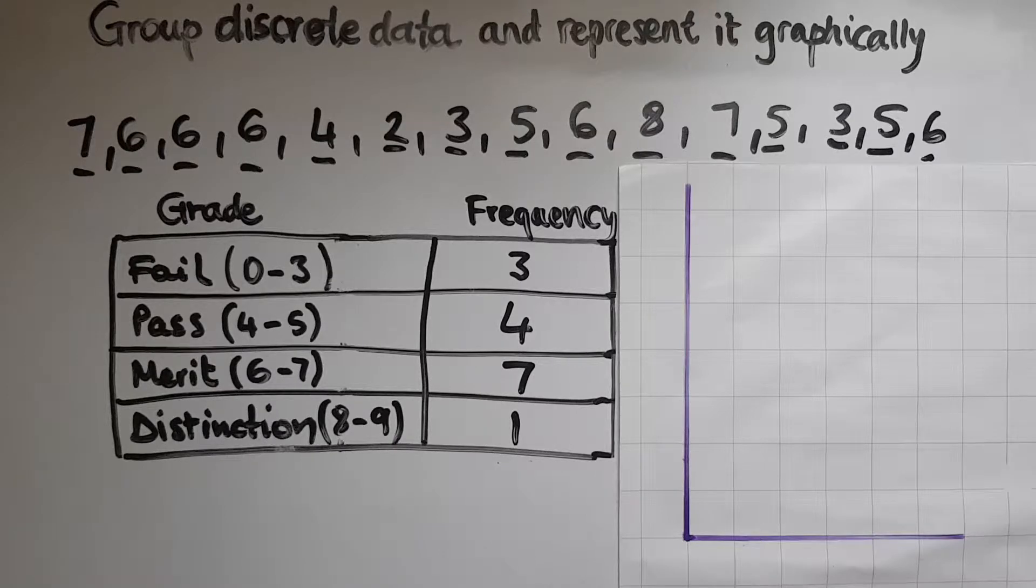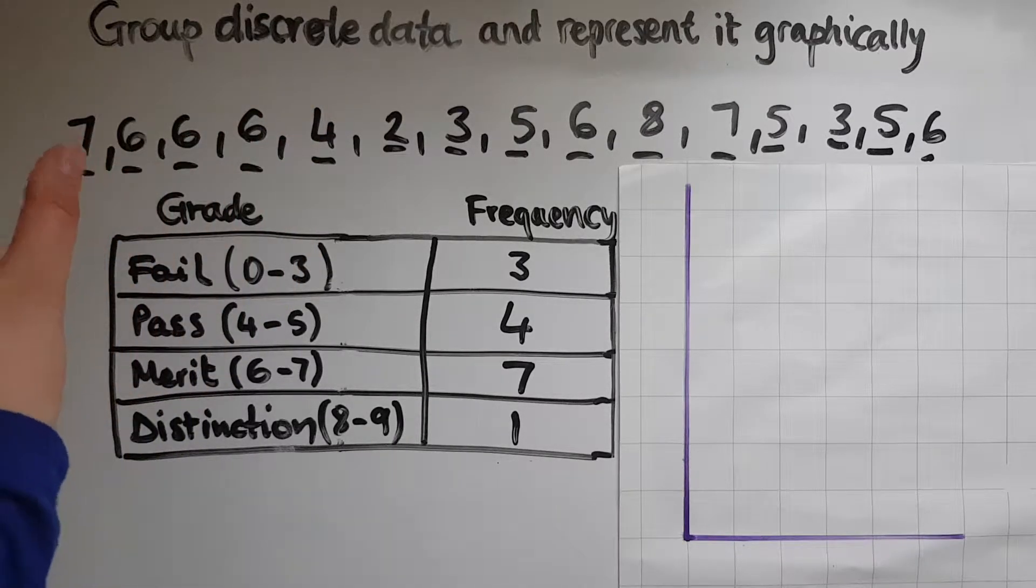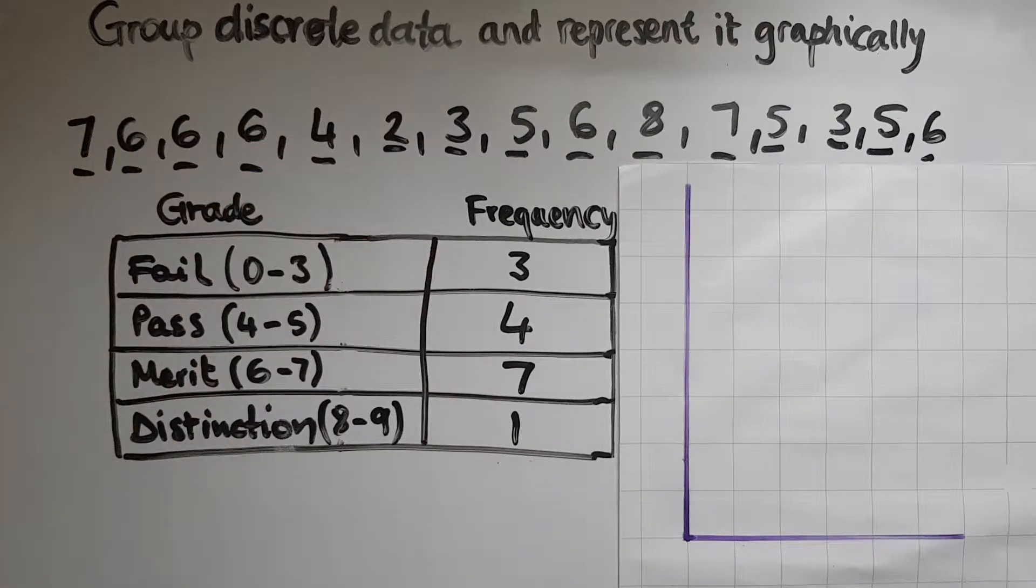Different values which include decimals as well, whereas discrete data is more like specific values. If we look at sizes of clothes, it can only be let's say 6, 8, 10, 12, 14 and so on.